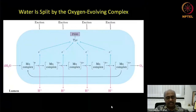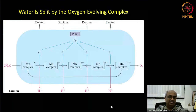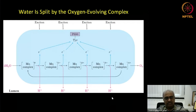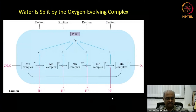Our next main topic in photosynthesis — the light reactions — is water splitting by the oxygen-evolving complex, also called the water splitting complex. Essentially, four electrons and four protons are taken away from two molecules of water. The four protons are pumped into the lumen — this is the second event of proton pumping. The first was when the excited electron moves to photosystem 1 via the chain of electron carriers, where cytochrome B6F pumped protons. The second is the water splitting complex itself.